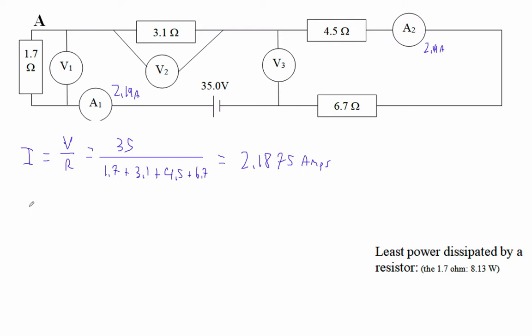And then we can find the voltages, right? So V1 is IR, so that's going to be 2.1875 times 1.7. What is that? 2.1875 times 1.7, that's 3.71875, or about 3.72 volts across that.